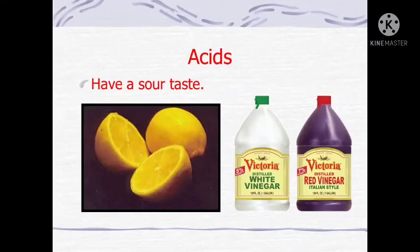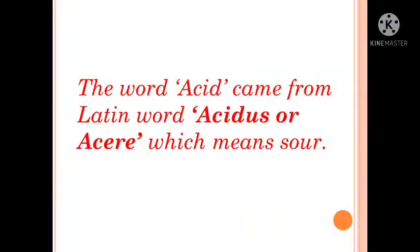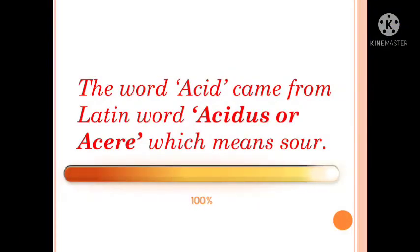Now, an acid is a sour tasting substance which possesses certain chemical properties. Substances which contain acids are said to be acidic in nature. The word acid has been derived from the Latin word acidus, which means sour in taste.